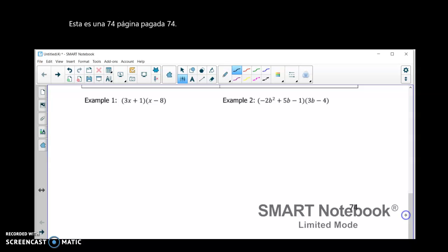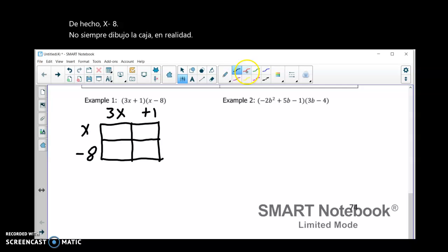Okay, so I'm going to do two examples. So, here I'm going to have 3x plus 1 and then x minus 8. And then I'm going to draw my box. I don't always draw the box, actually. But I am today.